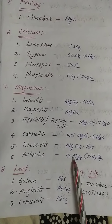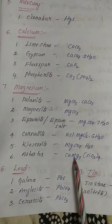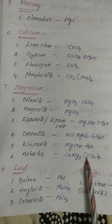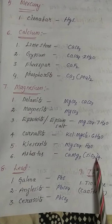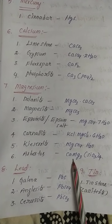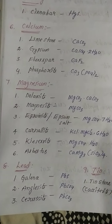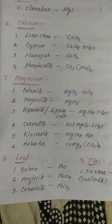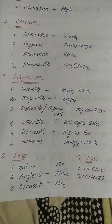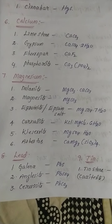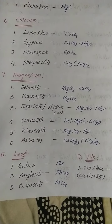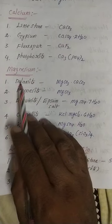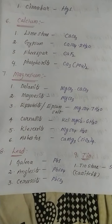Asbestos is calcium magnesium silicate — formula Ca·Mg₃(SiO₃)₄. These are the important minerals of magnesium.